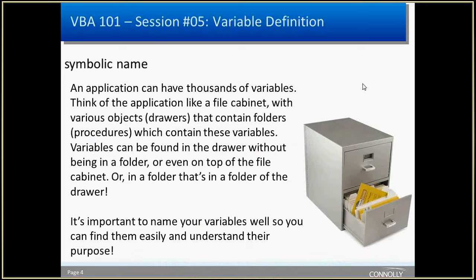An application can have thousands of variables all over the place. I like to think of an application as sort of like a file cabinet. Microsoft Access is probably what we all primarily code in with VBA. You can think of a drawer as a module — it could be a form, a module attached to the form, or a report. Within those, they can contain their folders — individual procedures, properties — and all those things can have variables.